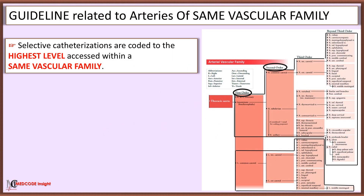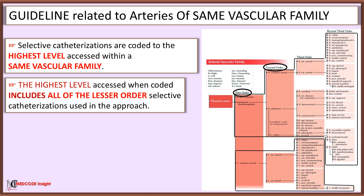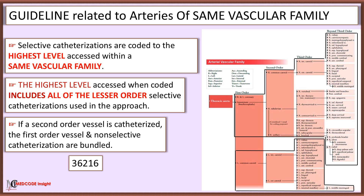Selective catheterizations are coded according to the highest level when accessed within the same vascular family. When coding for the highest level, it includes all of the lesser order selective catheterizations used in the approach. For example, if a second order vessel is catheterized, the first order vessel and non-selective catheterization are bundled together.